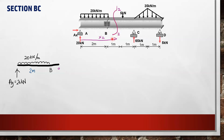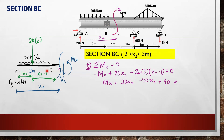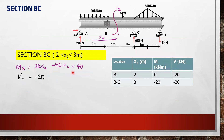For cut section 2-2, x2 starts from A, and section BC has a range from 2 to 3 m. We need to know the distance of all forces to point O when taking moments about O. For instance, the distance of the resultant to O is x2 − 1. From the written equations, we obtain the moment and shear at locations 2 m and 3 m from A.